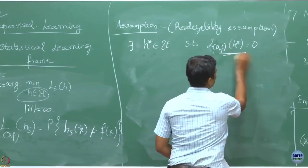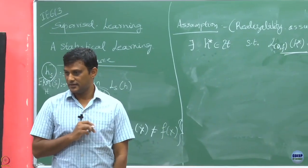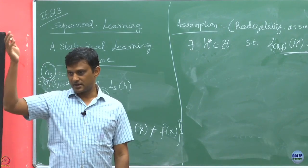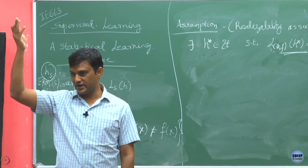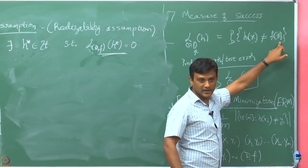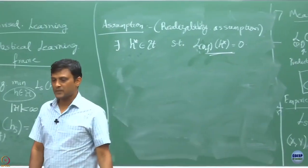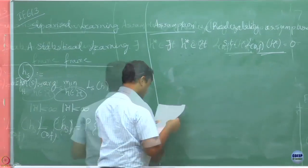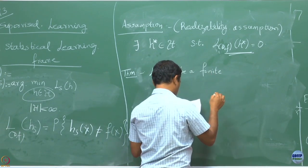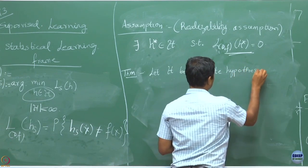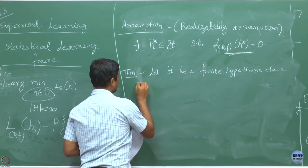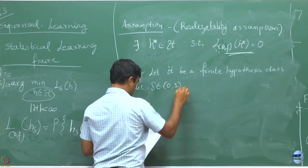Once we assume there exists such an H* belonging to our hypothesis class and we do empirical risk minimization, we know that at least H* makes the empirical quantity 0. Whatever H_S we get, it will also have empirical risk 0, and there could be more than one such hypothesis. We assume this — the hypothesis class is expressive enough to capture the true labeling function F, meaning it can do as good a job as the true labeler.